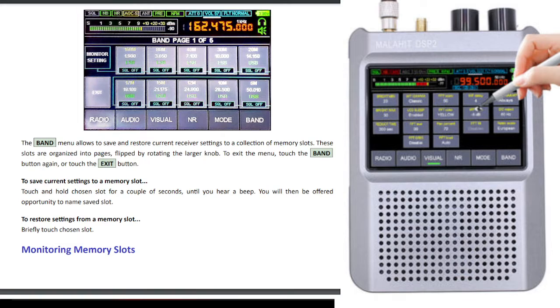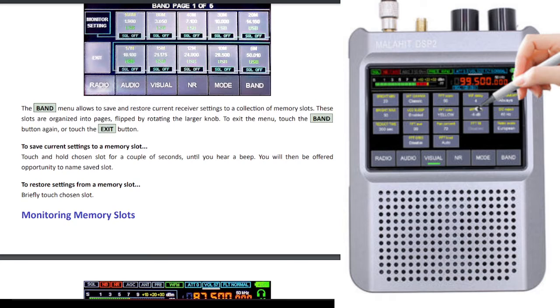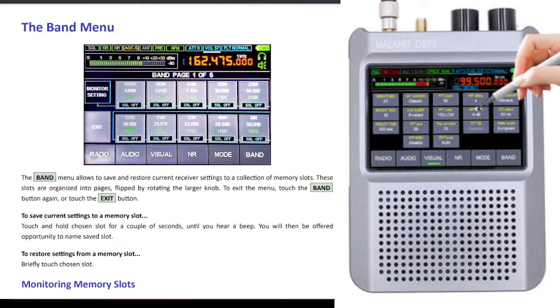You basically touch the band button and go to this one here. It says to save a current memory channel to a slot, touch and hold one of the grids.